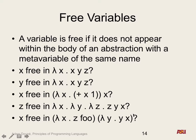If we reduce this expression — it's a valid lambda expression, it's an application, and the thing on the left is an abstraction, so we can reduce it. The X is not used anywhere, so it basically consumes this argument and gets rid of it, and then we have Z foo as the return.